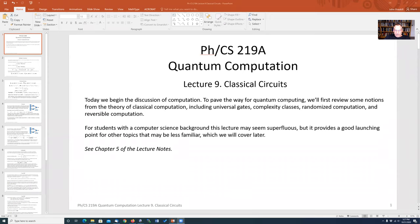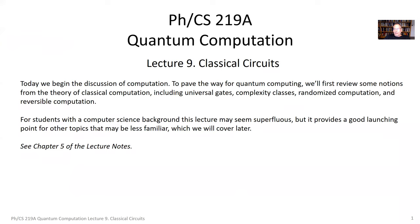Let's share the screen and get started. Before we actually get to quantum computing, there are some other notions of quantum computation we're going to want to discuss. Today we're going to review the notion of classical computing, circuit complexity, and universal gates in the classical context. And then next time we'll talk about randomized computation — computing when we have access to random numbers — and reversible computation, computations that we can run both forward and backward.